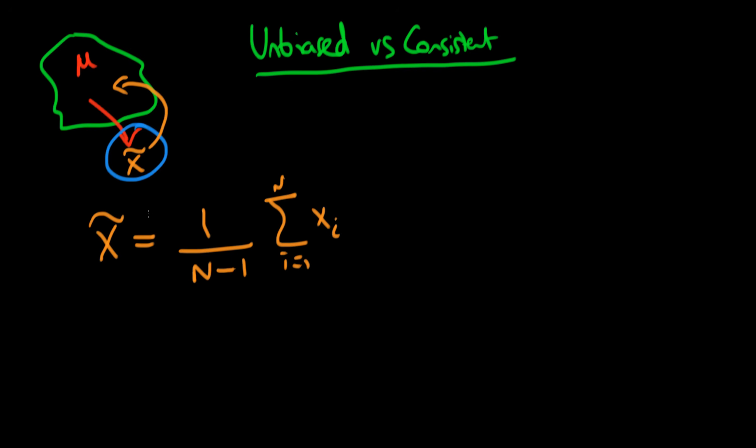So is X tilde a biased or unbiased estimator for the population parameter mu? Well, in order to answer that we need to have some sort of population process. Let's say that in the population each individual's height equals the mean height plus some idiosyncratic error which we can't predict which has a mean of 0.